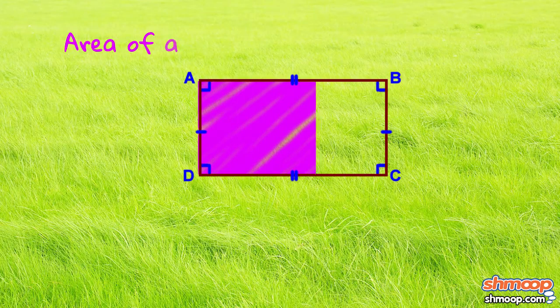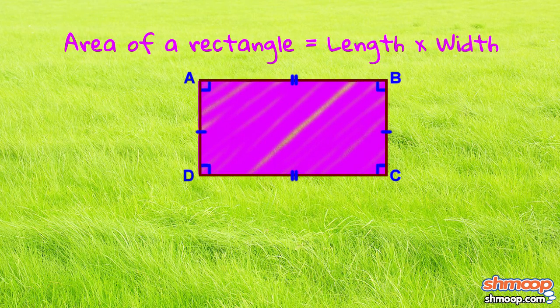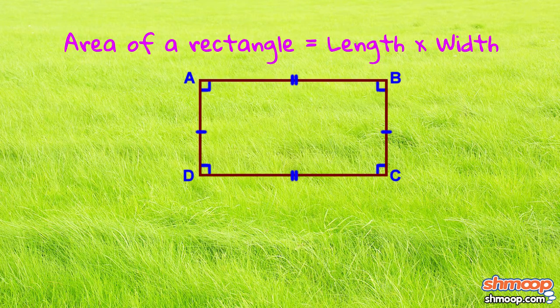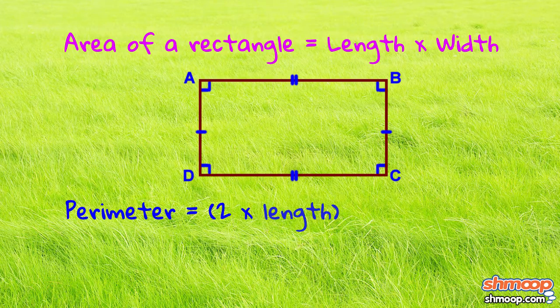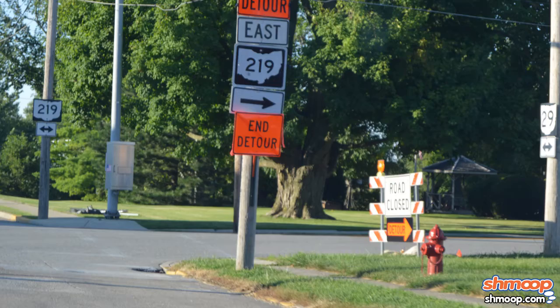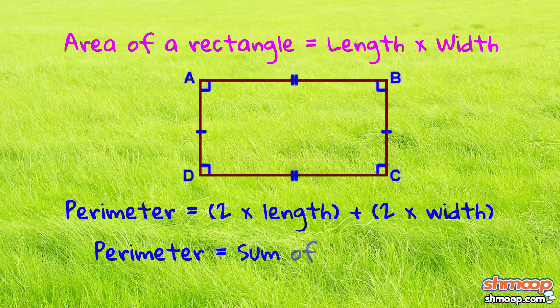The formula for the area of a rectangle is length times width, while the formula for the perimeter is the sum of two times the length and two times the width. Or if you'd rather go another route, the sum of all four sides.